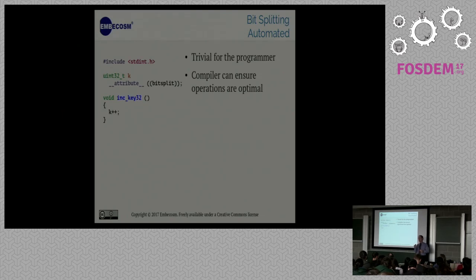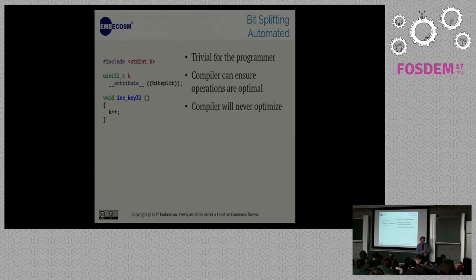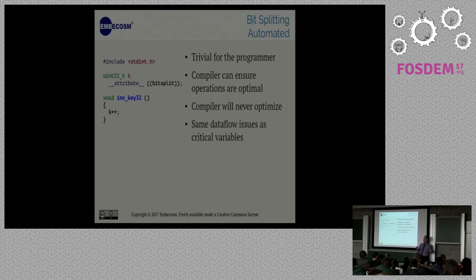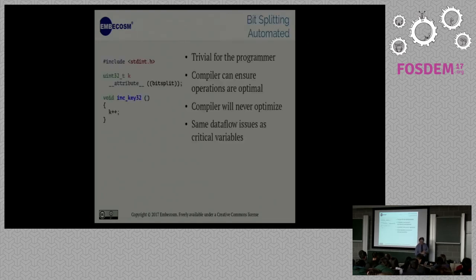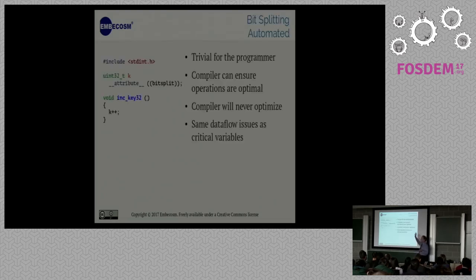And the problem is optimizing compilers are very good at spotting those patterns and they say, gosh, this is really clever, I could combine this into one 32-bit variable, I'll save it somewhere. So you may have got your four bits and then there's another bit of memory that has your 32 bits joined together. So the brilliance of the compiler completely scuppers us again. So one of the suggested approaches is this: we give yourself an attribute bit split and then you can just write k++ and the compiler will worry about that.